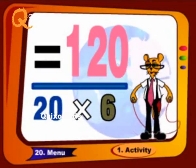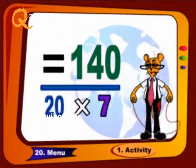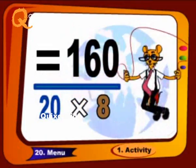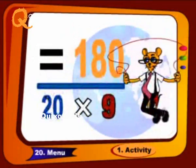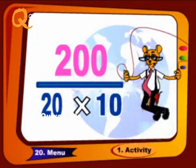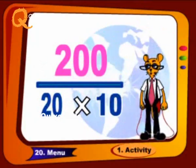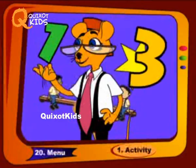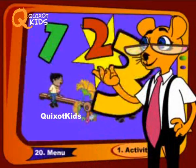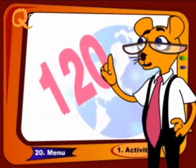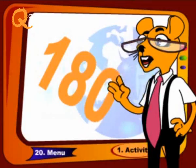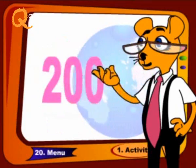Twenty 6s are 120, twenty 7s are 140, twenty 8s are 160, twenty 9s are 180, twenty 10s are 200. Once again, revise it with me like this: 120, 140, 160, 180 and 200.